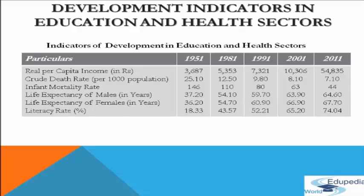First, we see real per capita income in rupees: in 1951 it was 3,687, which grew to 54,835 in 2011. Next, we look at the death rate per thousand population: in 1951 it was around 25, and in 2011 it came down to 7.